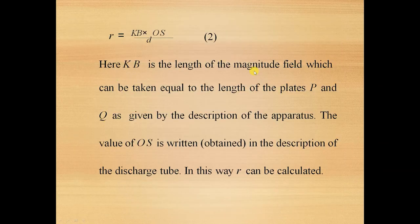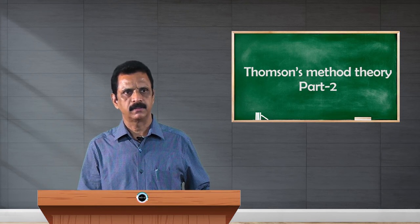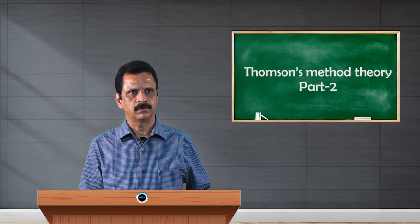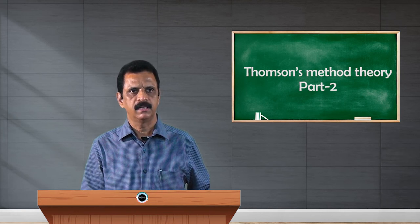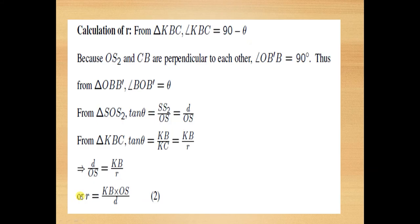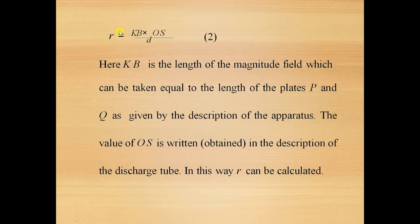Finally, we prove that R = KB × OS / D, because that is the required parameter. We wanted to know the value of the radius of the arc of the circle, which can be measured in terms of known parameters KB, OS, and D. KB is the length of the magnetic field region, which can be taken equal to the length of the plates P and Q as given by the description of the apparatus. The value of OS is also obtained from the description of the apparatus. From measuring the length of the plate and the distance from the deflection point to the screen, we obtain the values of KB and OS, and thereby we get the value of R.